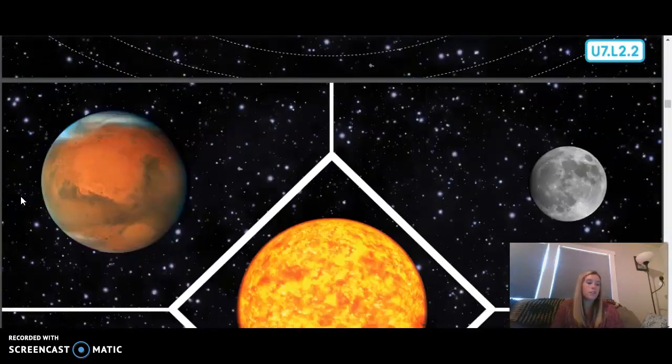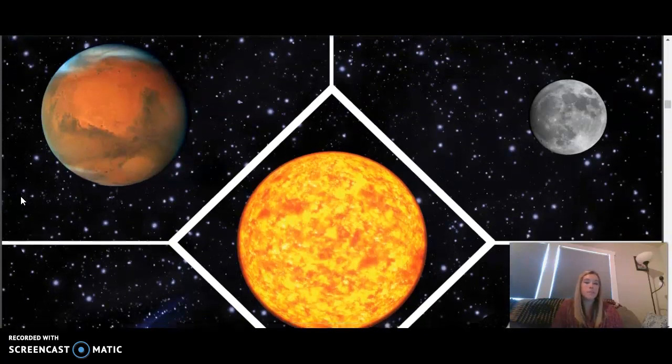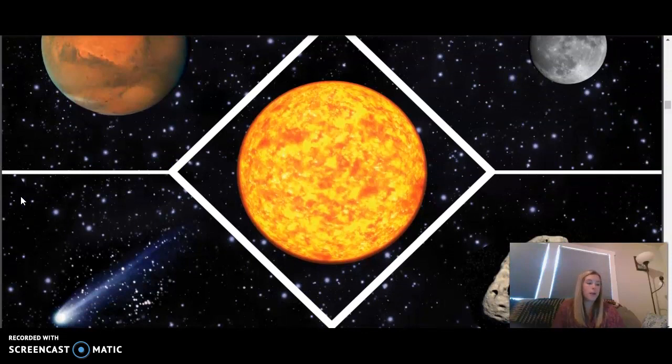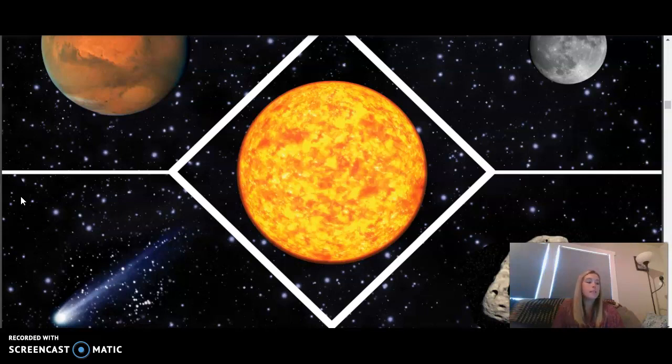You can think of our solar system as a gigantic neighborhood in space. But instead of being made up of houses or apartments like the neighborhood you might live in, our solar system is made up of the sun and the celestial bodies that orbit around it. Besides the sun, it includes other interesting things like planets and their moons, dwarf planets, satellites, asteroids, meteoroids, and comets.